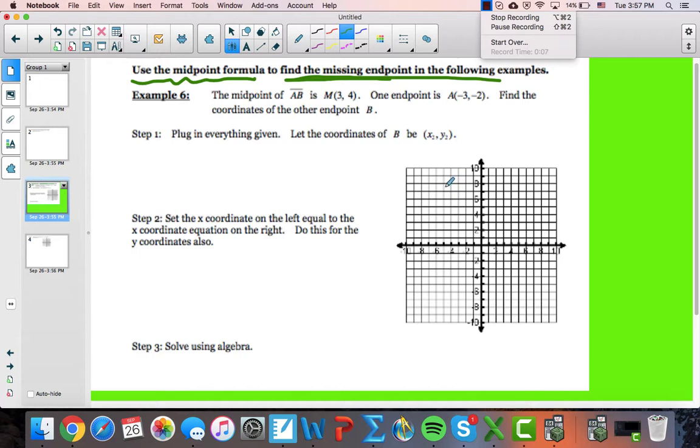It tells me that the midpoint of AB is M at point (3, 4). So this point right here, (3, 4), is the midpoint of a segment. One endpoint is (-3, -2), so right about here. So this is one of the endpoints, A.